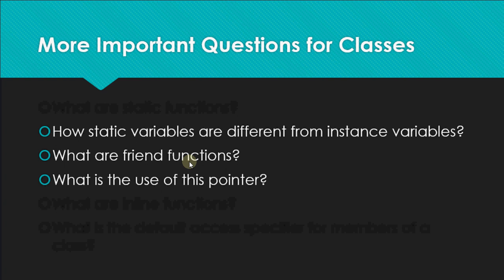What is the use of the 'this' pointer? This question is important both from a viva point of view and from a theory point of view. The 'this' pointer is a built-in pointer which stores the address of the current object — that's the definition.